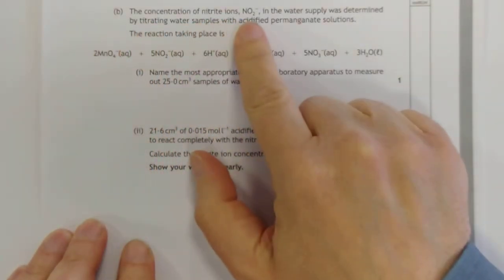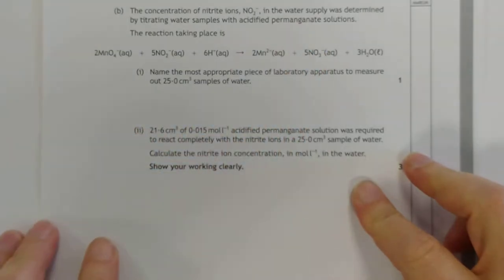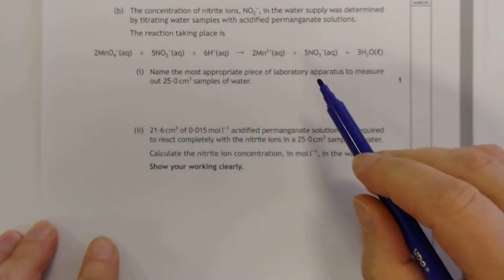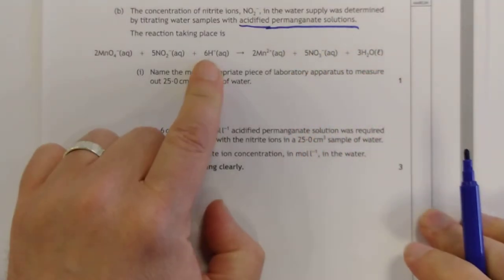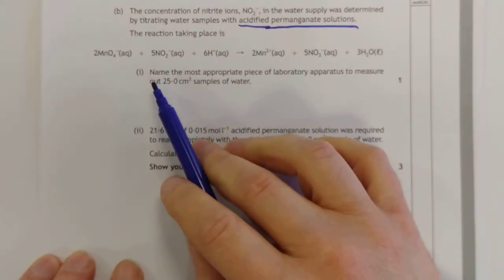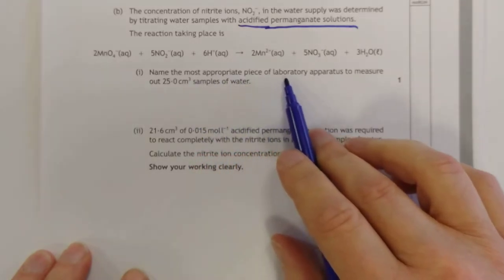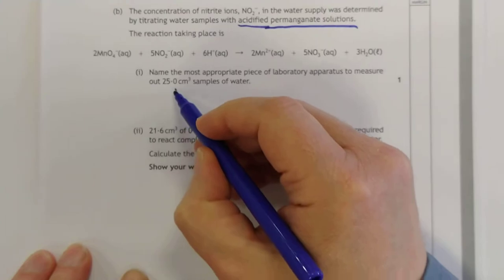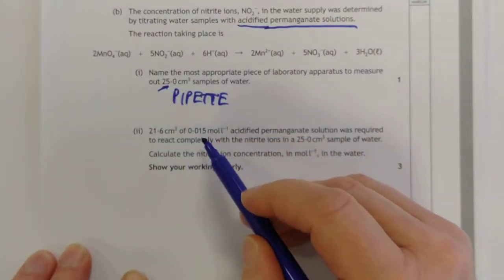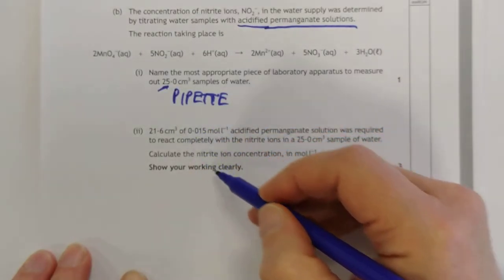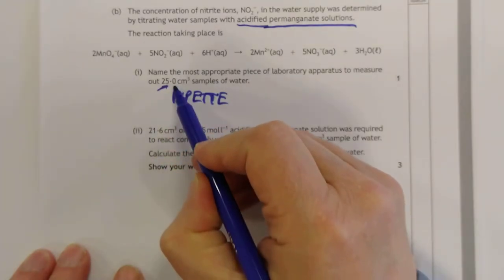So, what's going on here, guys? Concentration of nitrite ions, NO2-, in the water supply was determined by titrating water samples with acidified potassium permanganate solutions. If you haven't watched my Redox one, you might want to go back and have a look at that, because the Redox one explains why you actually need to add acid, apparently, randomly, to your permanganate. Well, it actually explains it here, but go and watch the video anyway. I need the money. As if I'm getting anything off this. So, here's the, oh, look, balanced reaction. Very nice, 2 to 5. So, we don't have to do a balanced equation on that. Name the most appropriate piece of lab to measure 25.0 samples. That is a pipette.